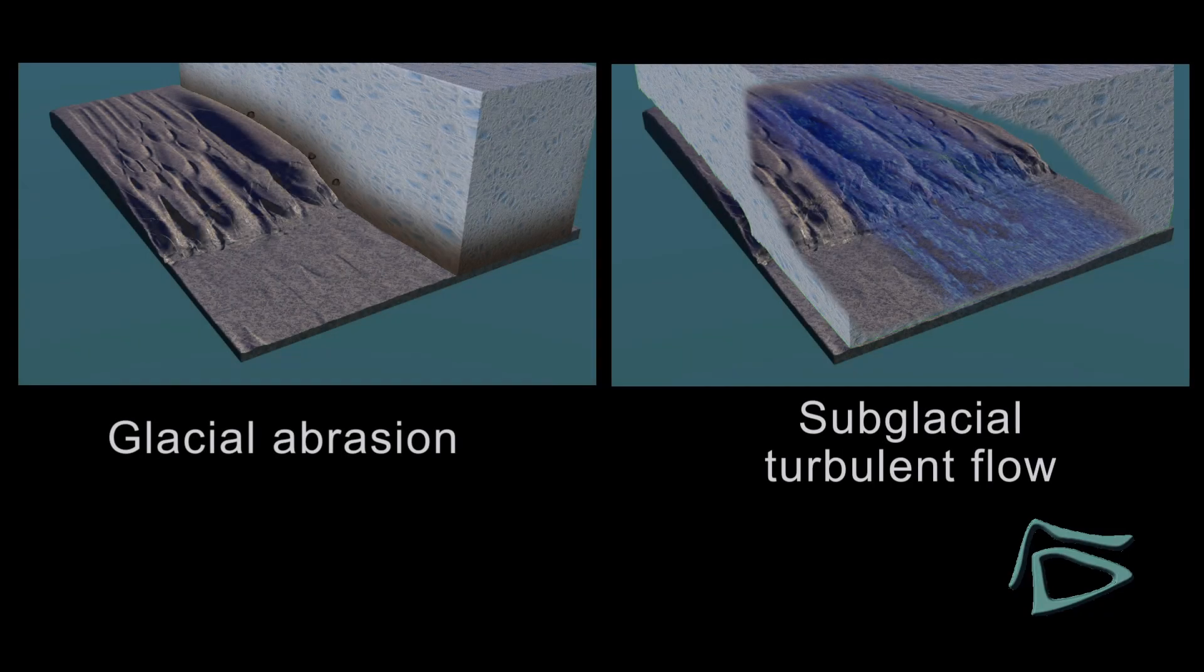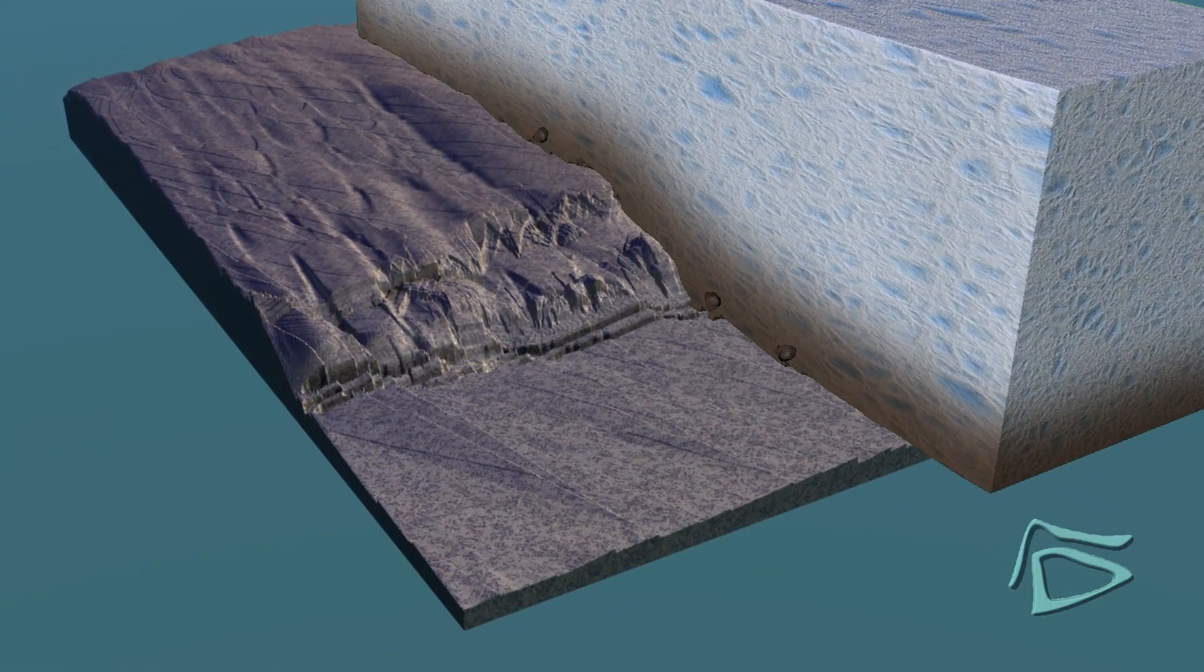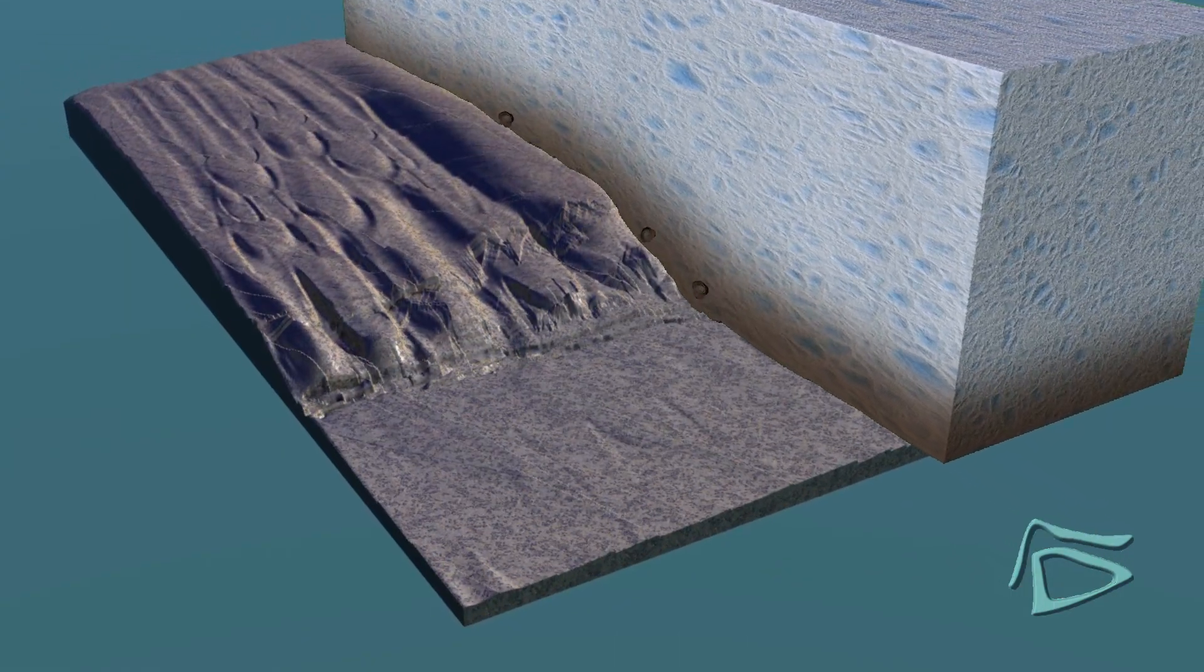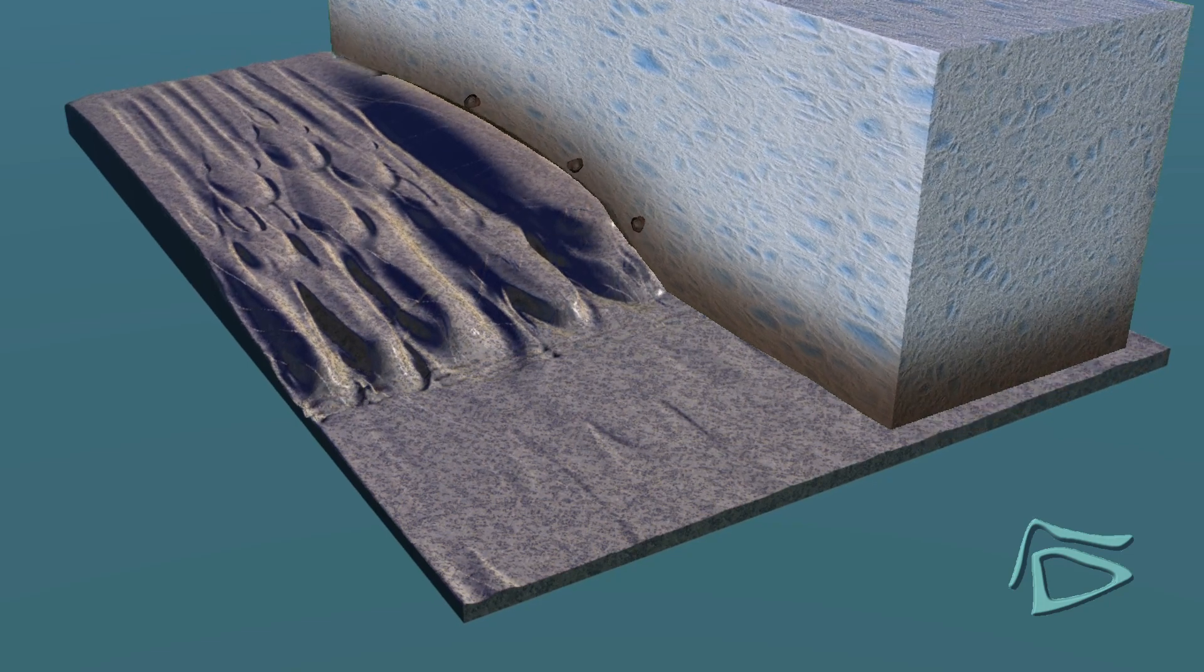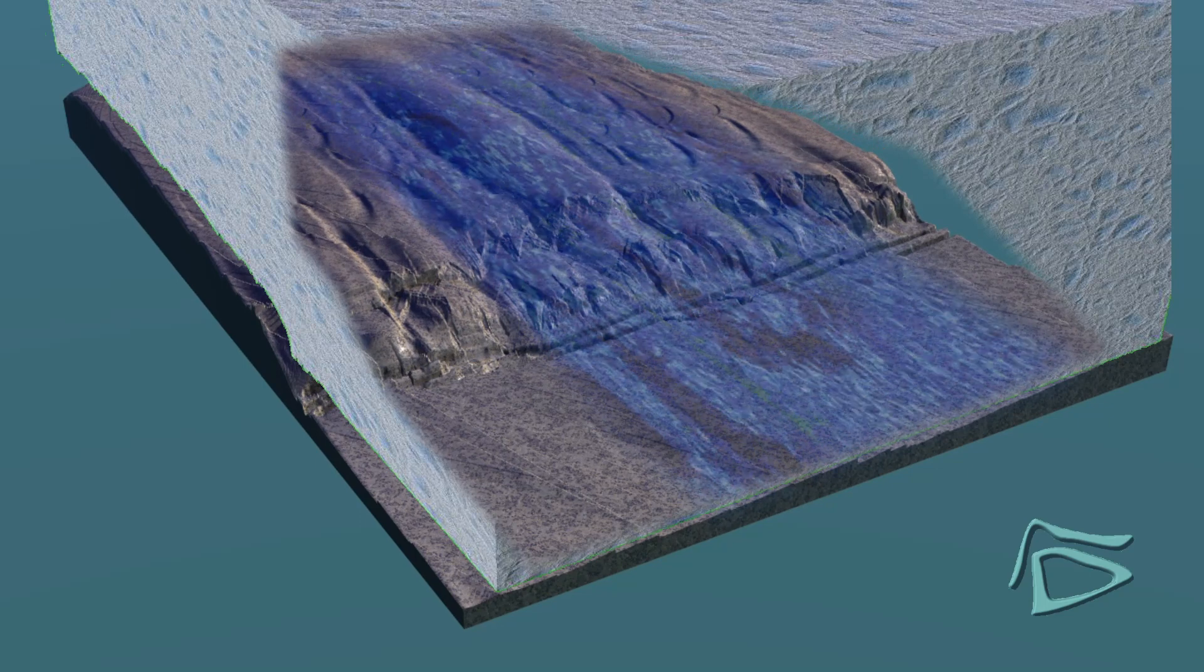There are two basic models to explain S-forms. Slow glacial abrasion by a moving ice sheet or debris beneath the ice. Rapid subglacial erosion by turbulent water flow.